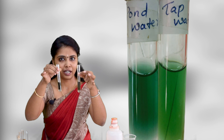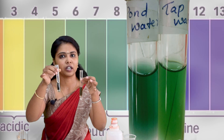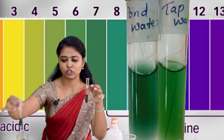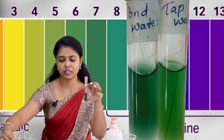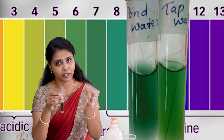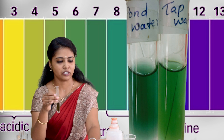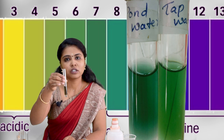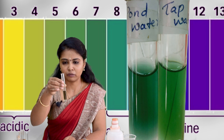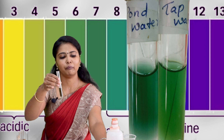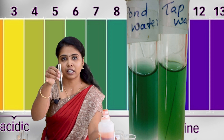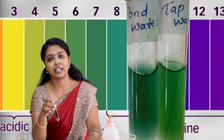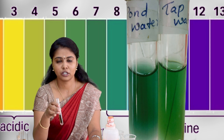Based on this difference, we can say that the pH of tap water and the pH of pond water are different. The pH of pond water is ranging from 8 to 9, and the pH of tap water is approximately 7 to 7.5. We can compare this colour change according to the indicator value given.